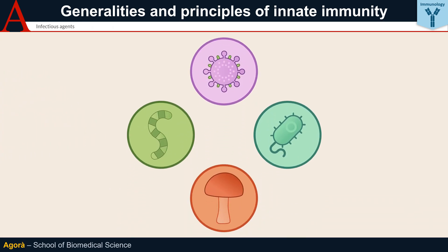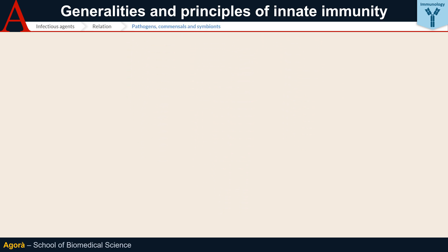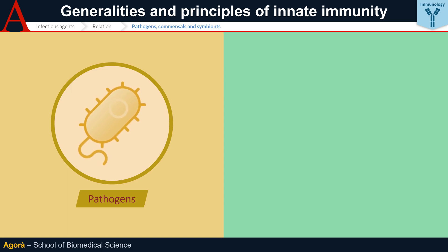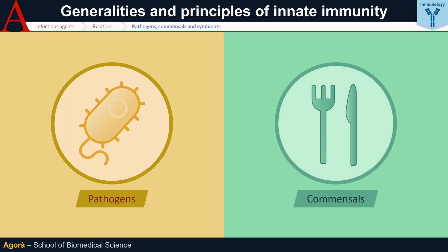However, the relationship that infectious agents establish with humans is not always harmful. Depending on their relationship they can behave as pathogens or commensals. Pathogens are harmful microorganisms which stimulate an immune response aimed at removing them. Commensals, on the other hand, co-exist with the human being in certain areas of the body — intestine, skin, conjunctiva, oral cavity — without causing any disease but rather providing benefit.